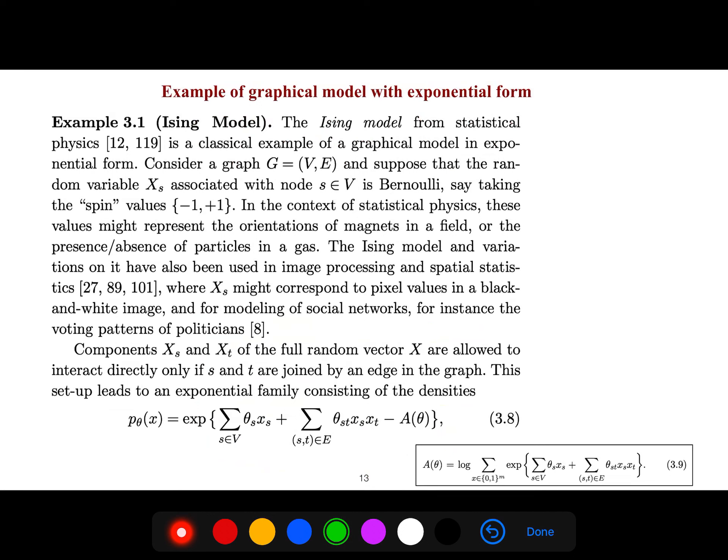So an example of graphical model that everybody talks about, especially in machine learning, because it's very simple to talk about, is the Ising model in statistics, in physics. Each edge could be selected. For example if you work with the nodes, we say that the spin values could be either plus one or minus one. So it's a probability space on the configuration space and anything is possible. So for example, this is one configuration: one minus one one minus one minus one. And what is the probability of that? So this is the total probability.